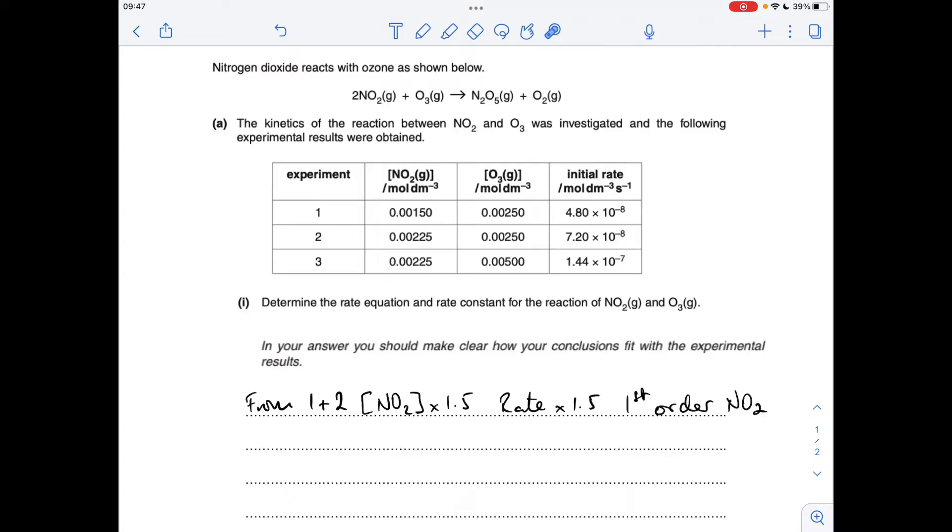And then to get the order with respect to O3, we can use rows 2 and 3, because you can see the NO2's staying constant. What's happening to the concentration of O3? It's doubled. What's happening to the rate? It's also doubled. So first order again.